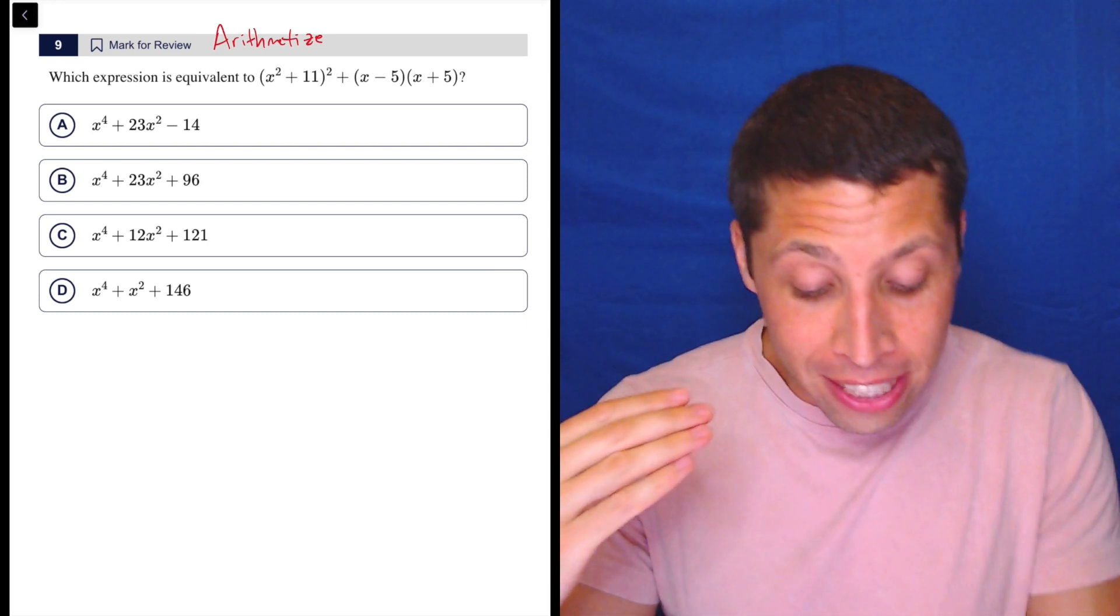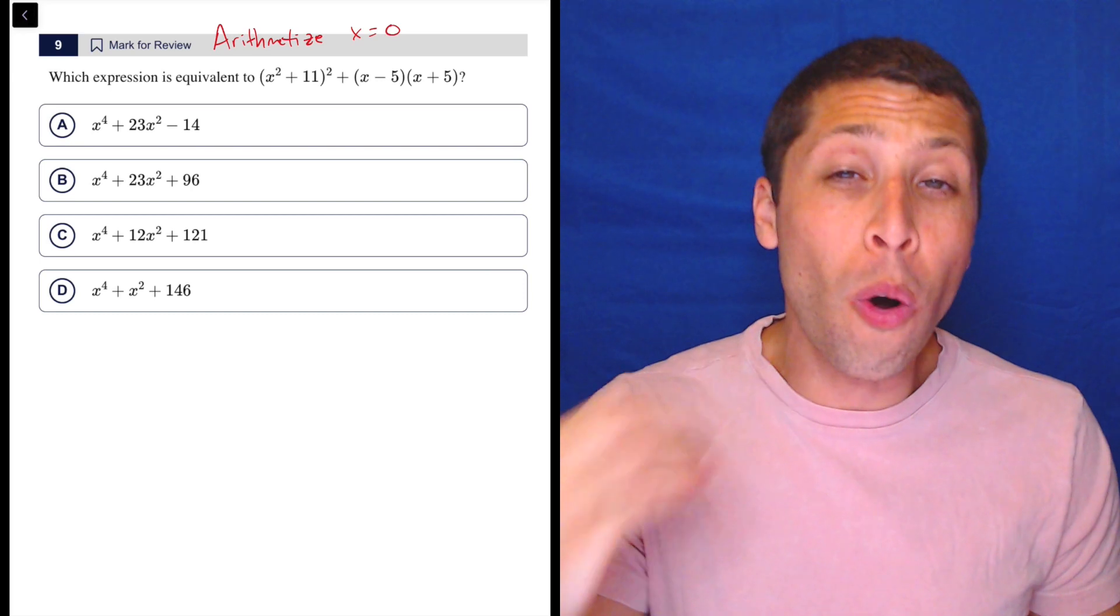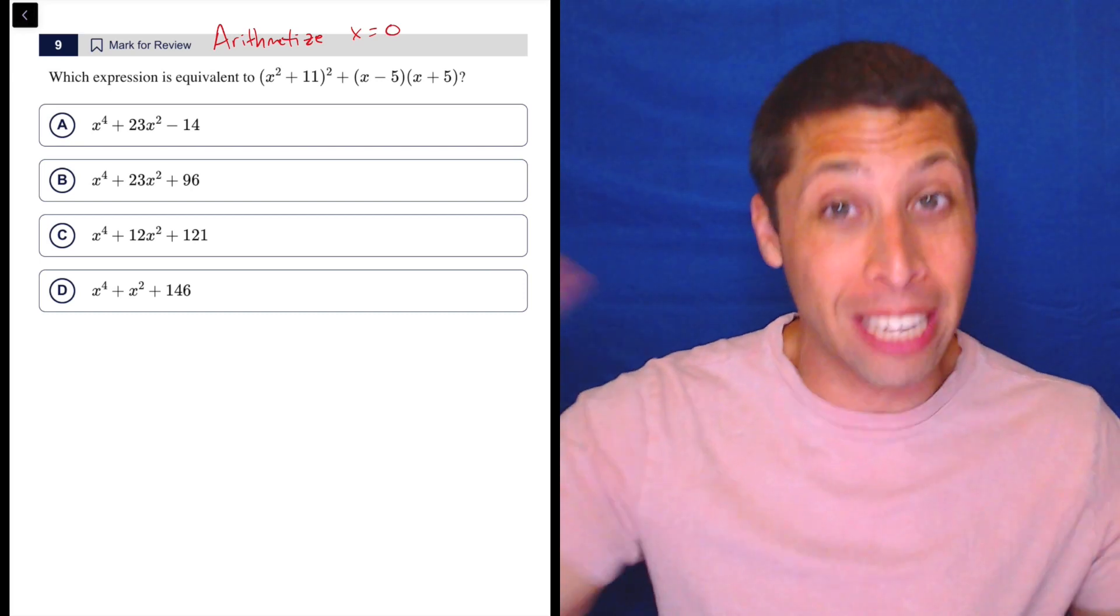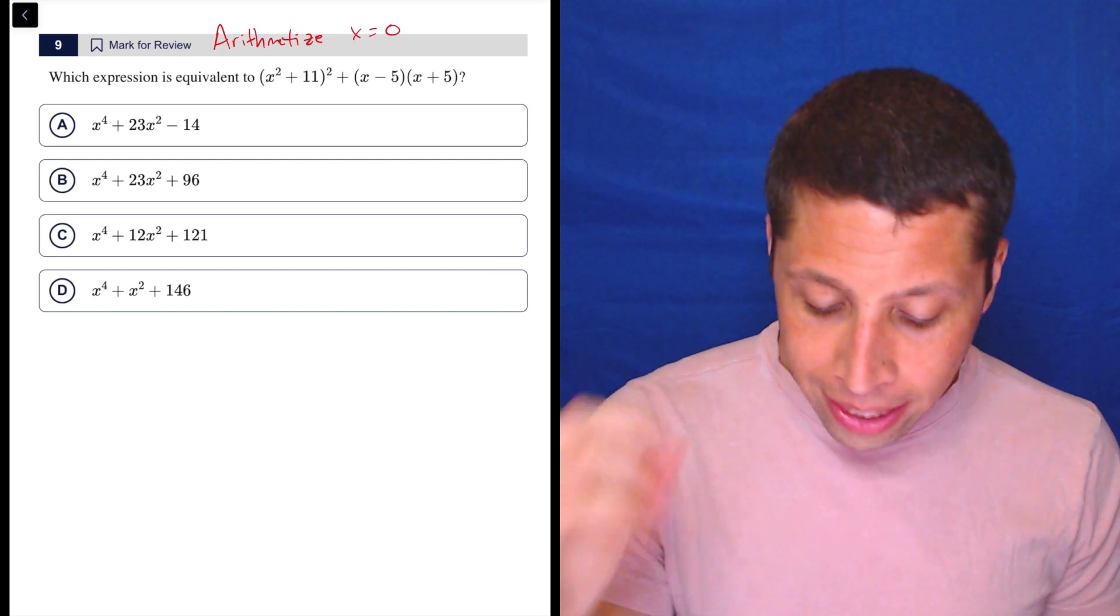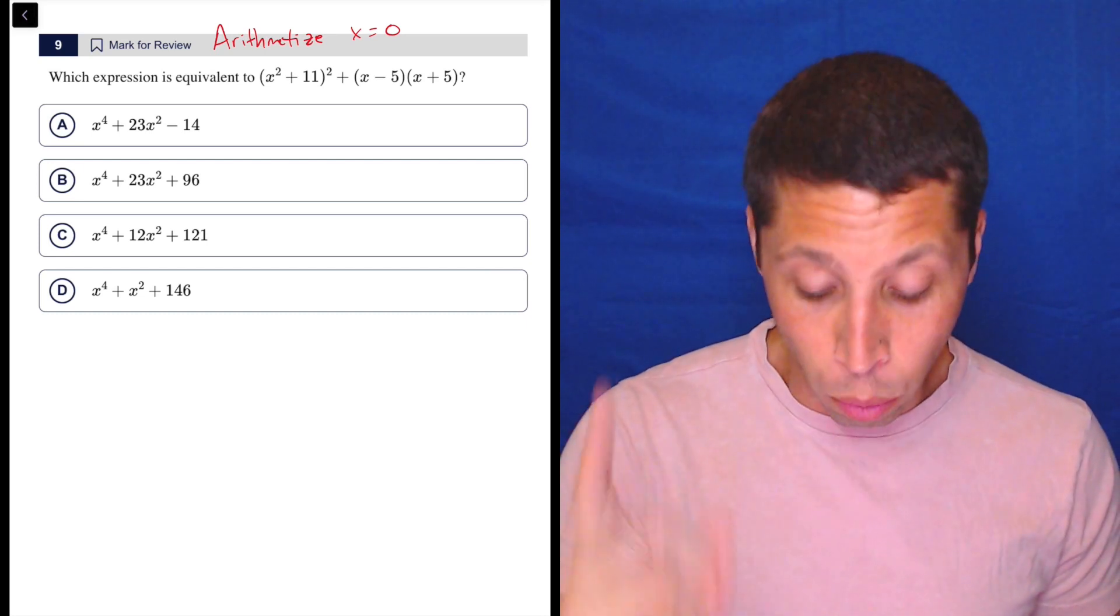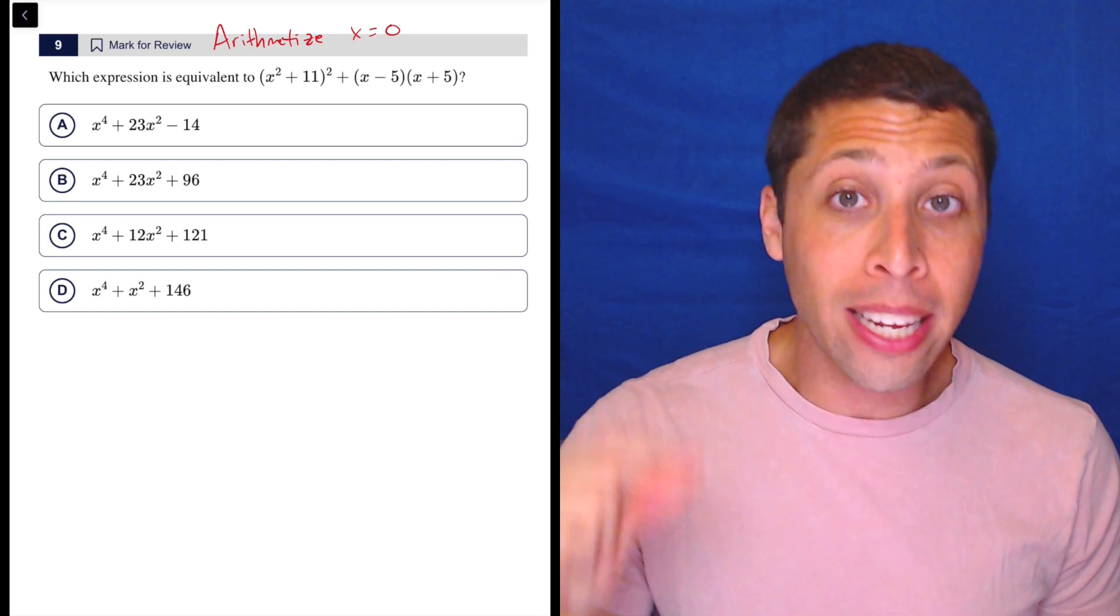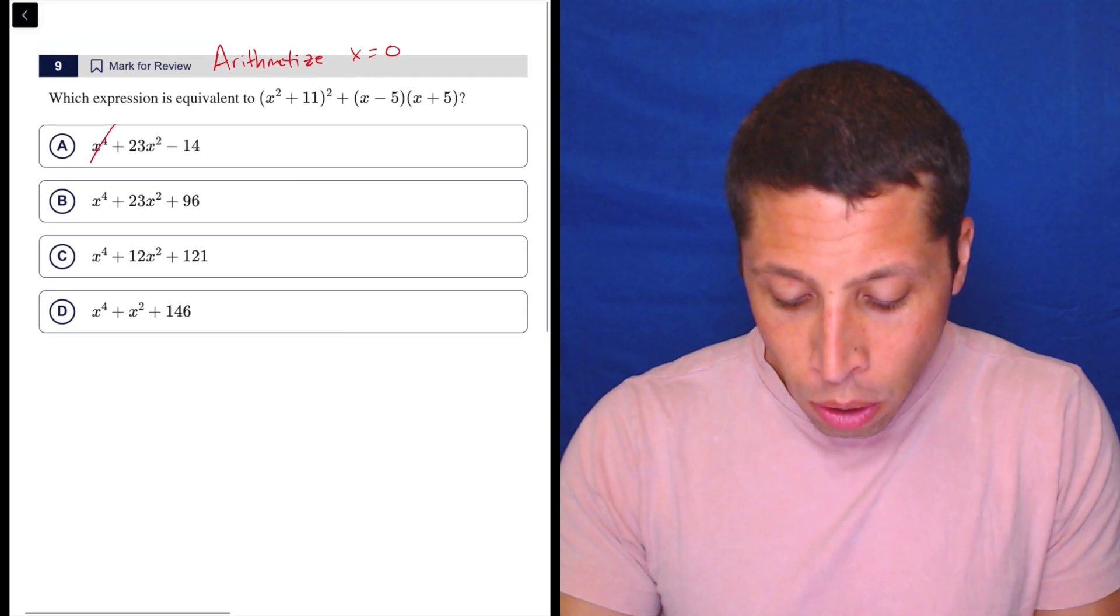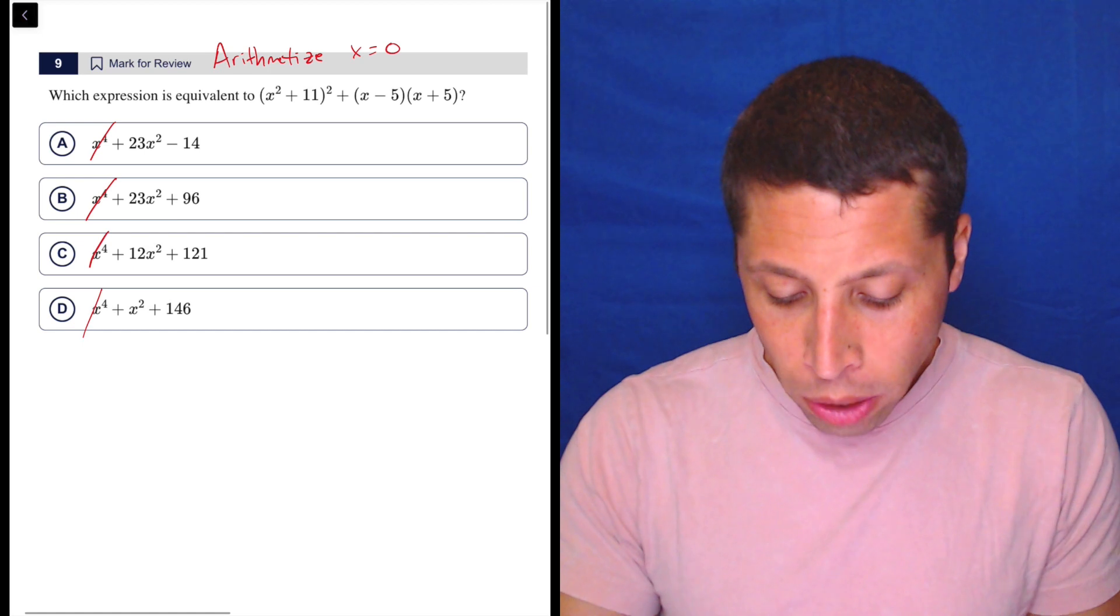Now, the reason that X equals zero would be so awesome to use here—first of all, it's easy to use no matter what, because it gets rid of a lot of stuff. But also look at these answer choices. I know how zero works. What it's going to do is it's going to knock out anything with an X, meaning all these X to the fourths will just be zero to the fourth. Those will go away.